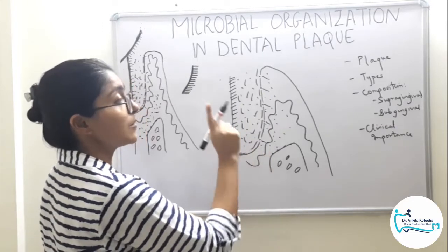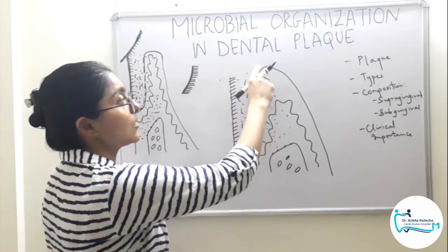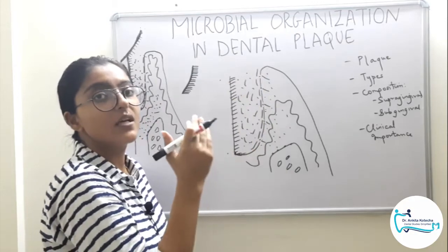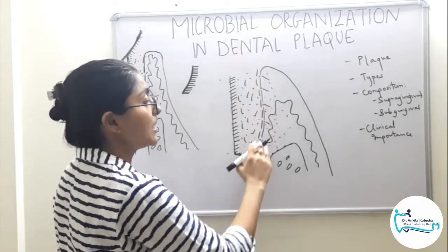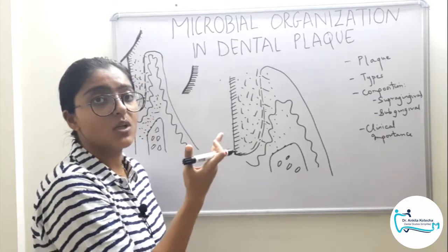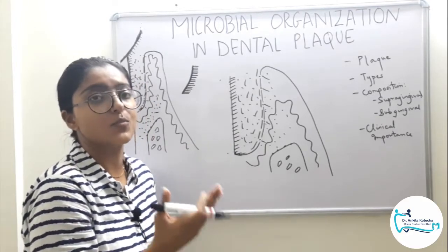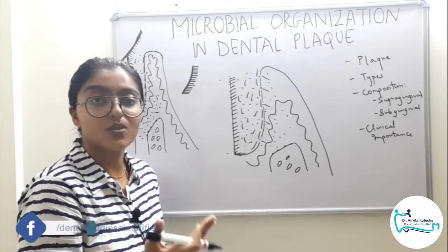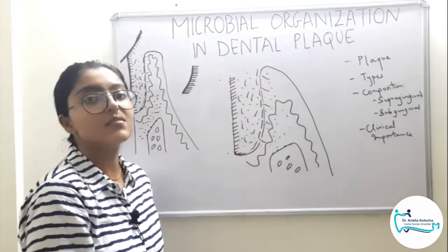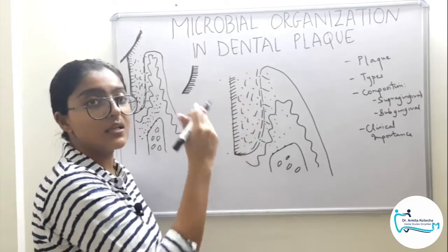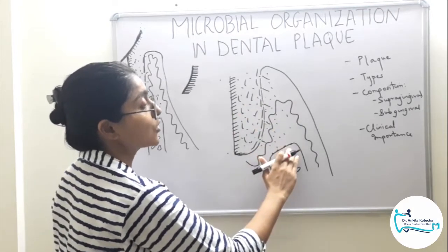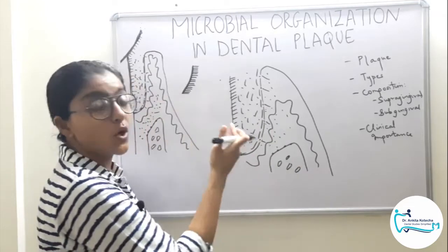Tissue-associated subgingival plaque differs primarily by its lack of a definite intermicrobial matrix. It is predominantly composed of gram-negative microorganisms, filaments, spirochetes, and flagellated rods. Examples include Streptococcus, Peptostreptococcus, and periopathogens such as Porphyromonas gingivalis, Treponema denticola, Tannerella forsythia, and Fusobacterium nucleatum. Host cells are also present within the sulcus, and bacteria from the plaque are found within the tissues — epithelium, connective tissue, and even on the bone — demonstrating host tissue invasion.